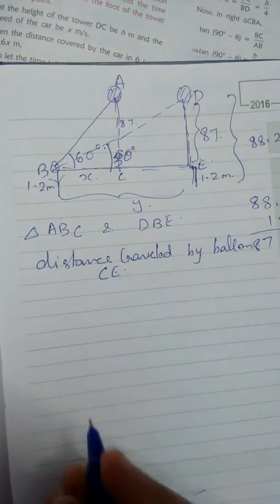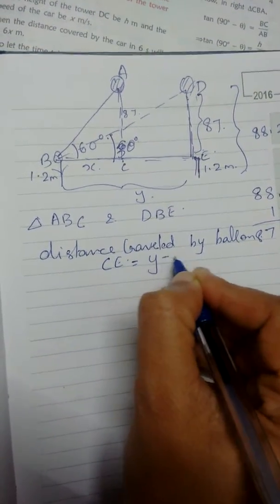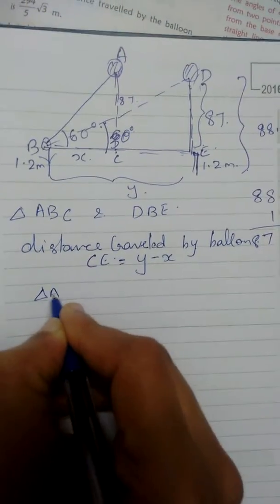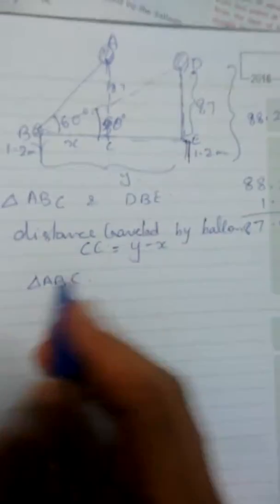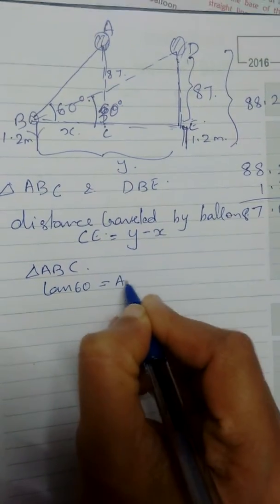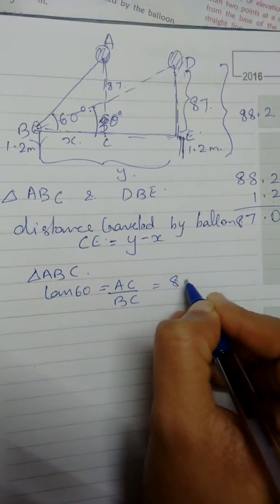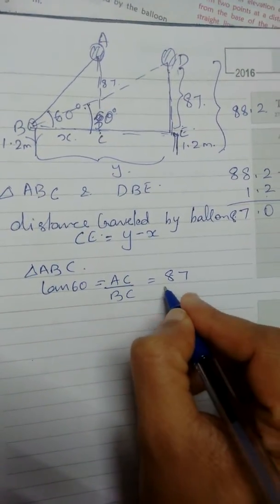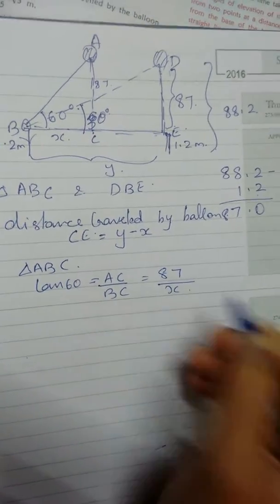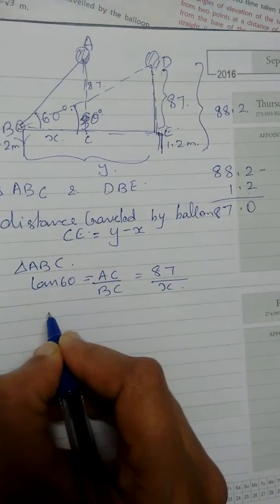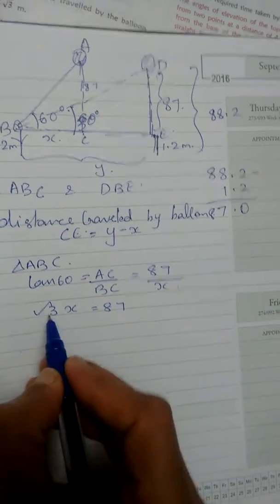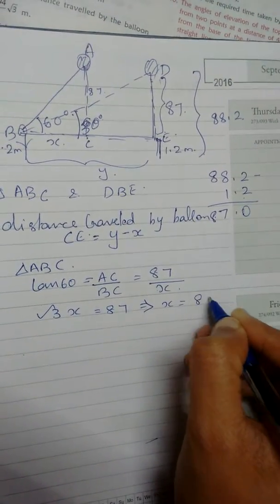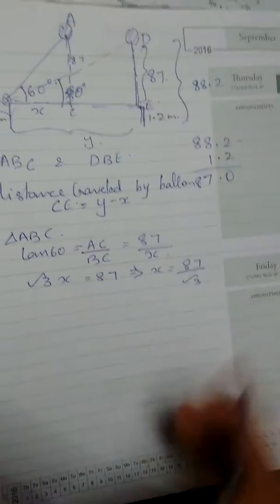CE is what we need to find, where CE equals Y minus X. Consider triangle ABC: tan 60 equals root 3, so root 3 times X equals 87. Therefore X equals 87 by root 3. That is the first equation.